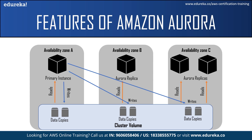There are two types of DB instances that make up an Aurora DB cluster. First, the primary DB instance supports read and write operations and performs all data modifications to the cluster volume. Each Aurora DB cluster has one primary DB instance. Second, the Aurora replica connects to the same storage volume as the primary DB instance and supports only read operations. Each Aurora DB cluster can have up to 15 Aurora replicas. Aurora replicas are located in separate availability zones, providing high availability. When a primary DB instance becomes unavailable, Aurora automatically fails over to an Aurora replica, and you can specify failover priority for your Aurora replicas.